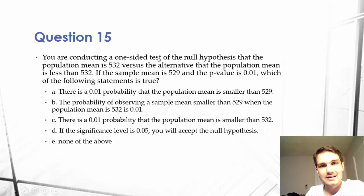You are conducting a one-sided test of a null hypothesis that the population mean is 532 versus the alternative that the population mean is less than 532. So this is going to be a left-tailed test, right? Less than. If the sample mean is 529 and the p-value is 0.01, so 1% p-value,